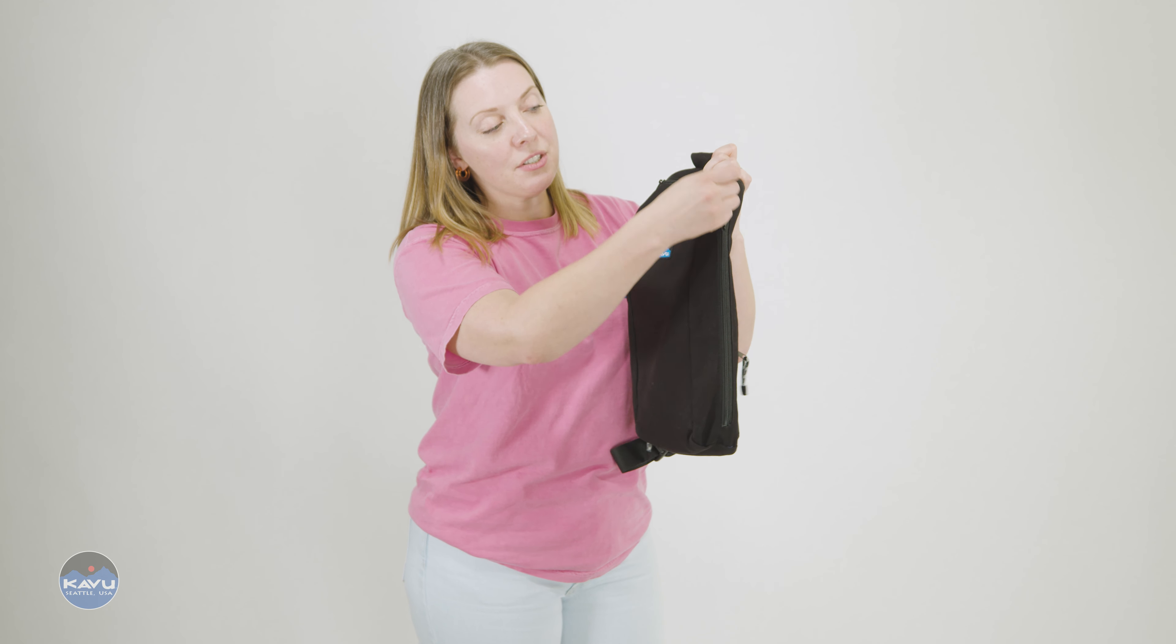On the left-hand side, again, an additional pocket with polyester liner. These zippers all have Cavu rope zipper pulls on them as well. It's a fantastic accent for your bag.